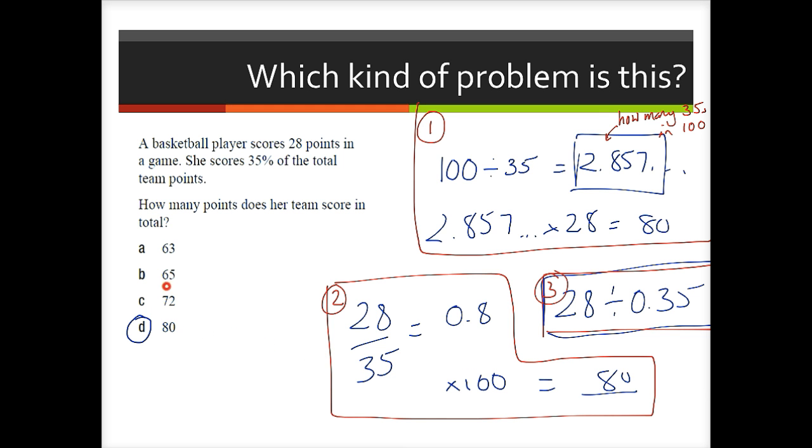We could, of course, again, check all four since this is a multiple choice question. Simply take each of these, multiply by 0.35, and see which one gives us 28 points. And the answer is, whichever way you look at it, D.